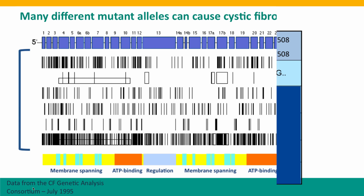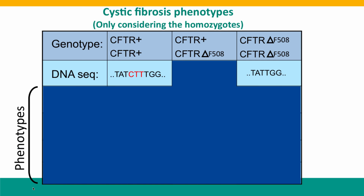Let's focus on the one most common allele, the delta F508 allele, which removes three nucleotides — three base pairs — from the gene. Those three base pairs correspond to the codon for the amino acid phenylalanine at position 508 of the protein.